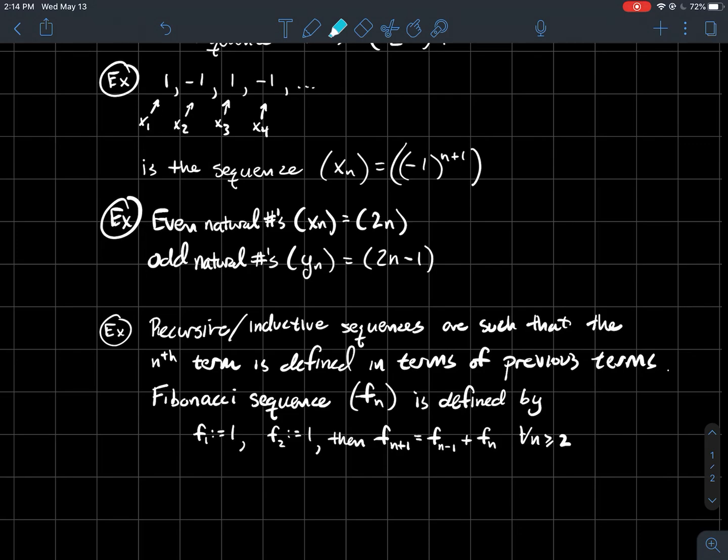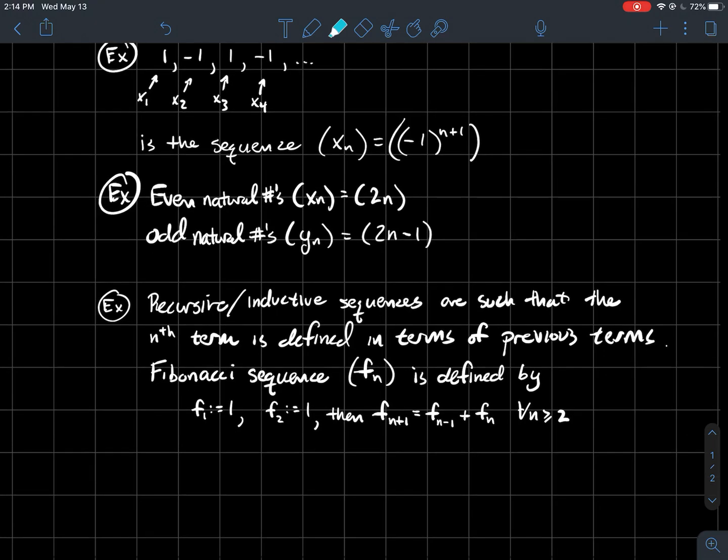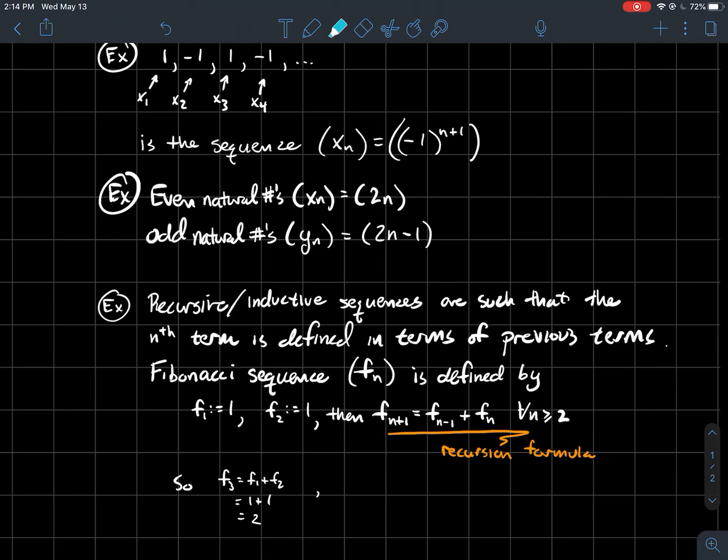I'll denote it by parentheses with fₙ. The first term is just one. The second term is also one. But now I'm going to give you a formula that'll tell you how to get every term after that. We're just going to add the two previous terms, and that's the next one. So f sub n+1 equals f sub n-1 plus f sub n. That last part is called the recursion formula. So you'd use that to find the rest of the terms for all n greater than or equal to 2.